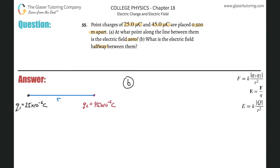So for letter B, what is the electric field between them? We know the distance between these two objects is 0.5 meters, and they want to know the electric field exactly in the middle. The distance between the black charge and this point of interest should simply be half of 0.5 meters, so that'll be 0.25 meters.